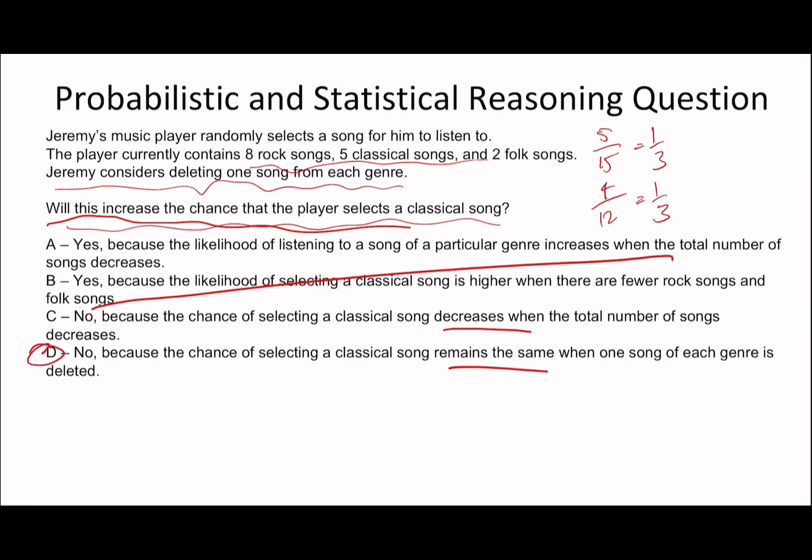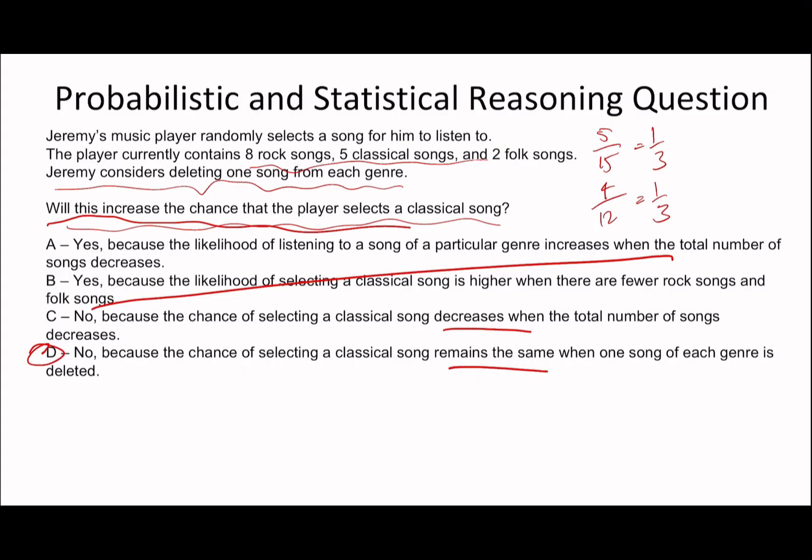Remember, always ask yourself: will this increase the chance that the player selects a classical song? I would say no, and it says decreases or remains the same. The answer is going to be D, remains the same. This is your bread and butter question. As soon as you see it, pattern recognition, bang, you immediately start doing the math.